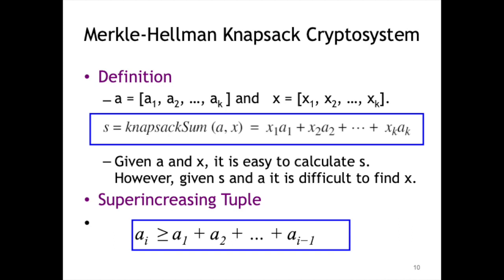Merkle-Hellman Knapsack Cryptosystem: In this cryptosystem, given set A and set X, it is easy to calculate S, but given S and A, it is difficult to calculate set X as it is a hard problem.